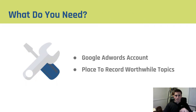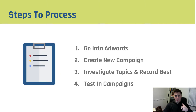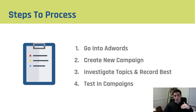In order to find topics you might consider advertising on, you really need two things: number one, an AdWords account, and number two, a place to record worthwhile topics. The process I use is: head into AdWords, create a new campaign, investigate topics and record the ones I think are the best fits, and then go start testing them in my campaigns.